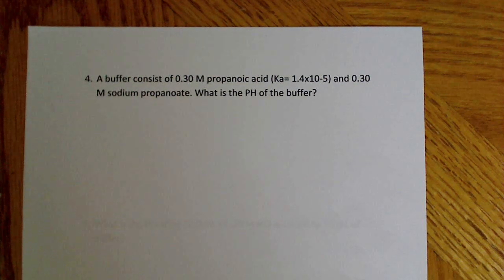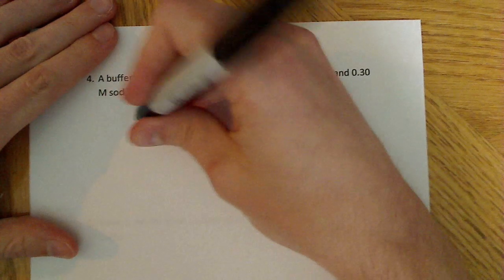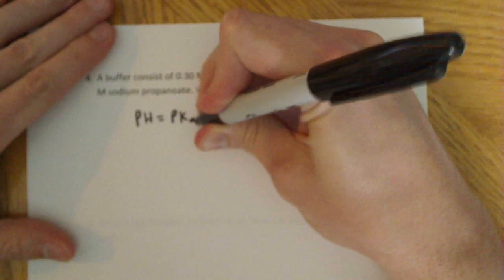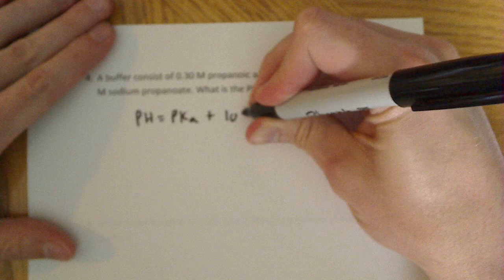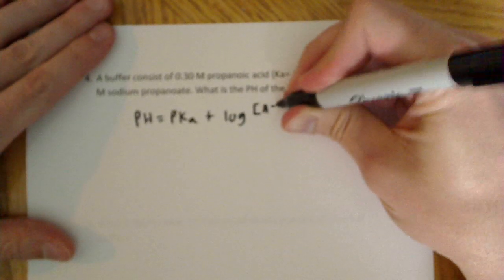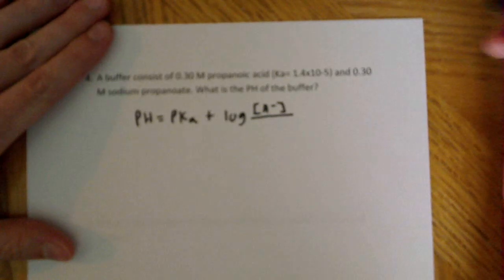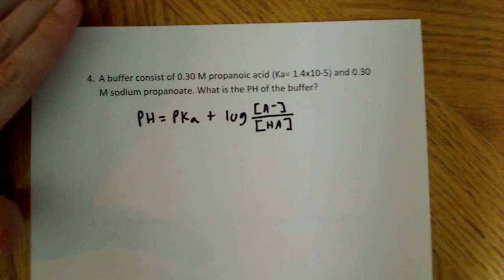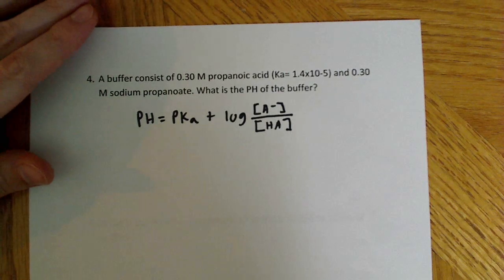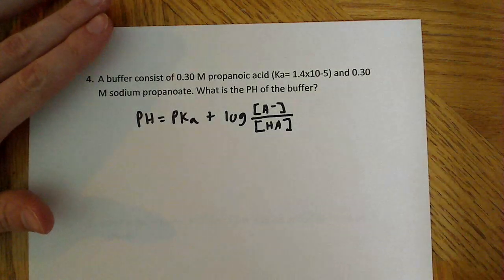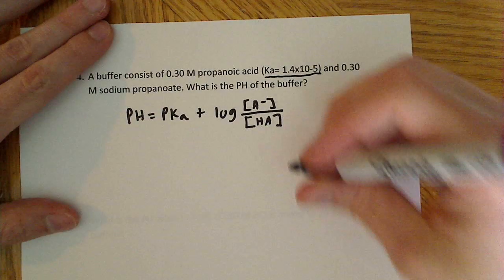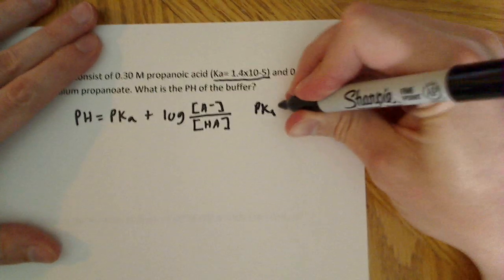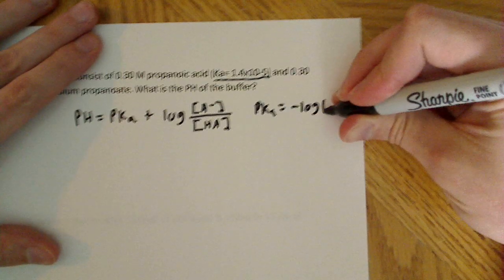Well, we're dealing with a buffer, so we're probably dealing with Henderson-Hasselbalch again. So we can write down the pH is equal to the pKa plus the log of the concentration of deprotonated, in this case propanoate, over protonated propanoic acid. Now that we have that, we can actually get the pKa, because we're given the Ka up here. So again, we go back and use our equation, that the pKa is equal to the negative log of the Ka.